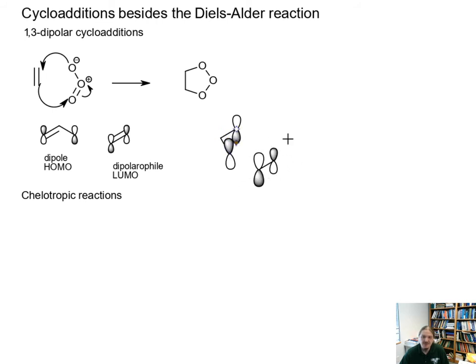It's also worth noting that the total number of electrons here is 4n+2. There are actually 4 pi electrons in the 1,3-dipole and 2 pi electrons in the dipolarophile. So this is actually a 6 electron reaction, even though there are only 5 atoms.